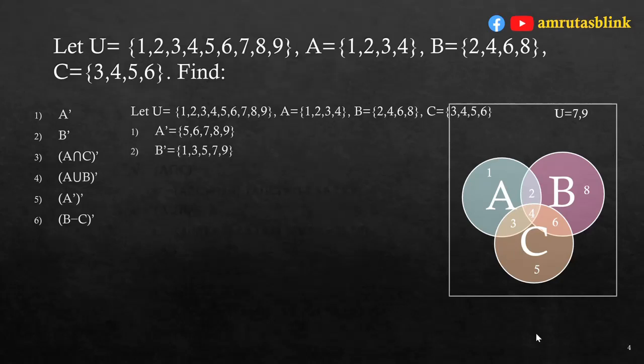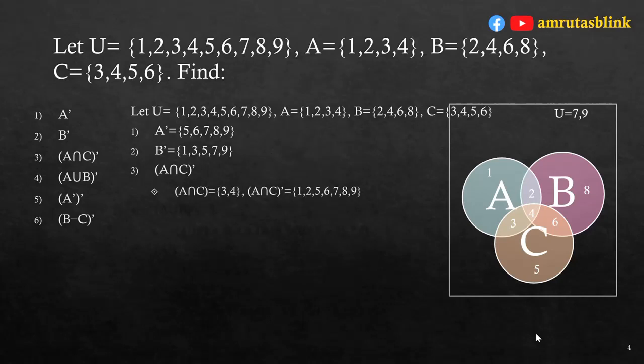Similarly, B complement = {1,3,5,7,9} since 2, 4, 6, and 8 are already in set B. Next, to find (A∩C) complement: A∩C = {3,4}, so (A∩C) complement = {1,2,5,6,7,8,9}.